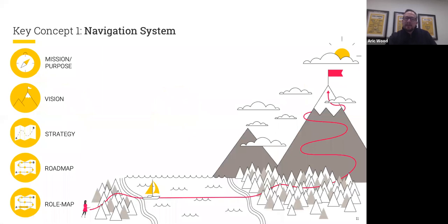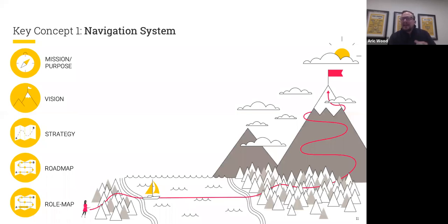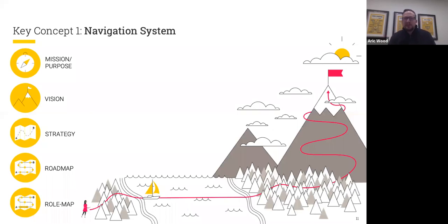Let's talk about the first key concept: line of sight, which we discuss in terms of the navigation system. As humans, we've been navigating to far-off destinations for as long as we can remember. Any journey — whether a holiday trip, getting to work, or a long-term strategy — requires a sense of where you're headed and how you're going to get there. A good organizational structure will have a navigation system that includes a clear mission or purpose, a clear vision, a clear strategy, a roadmap broken down into digestible chunks, and a role map that describes each person's part to play.